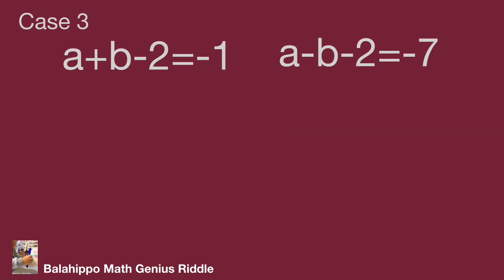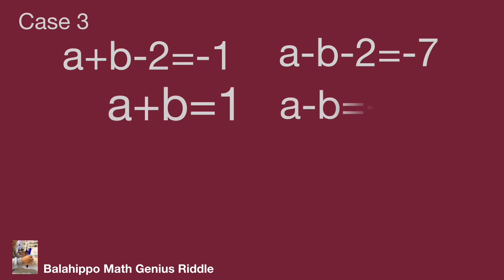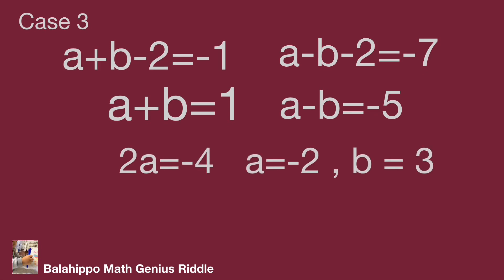In case 3: a plus b minus 2 equal to negative 1 and a minus b minus 2 equal to negative 7. Solving gives a equal to negative 2 and b equal to 3. This is also a correct answer.